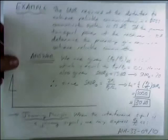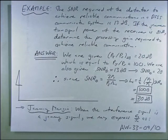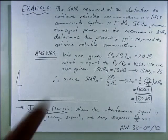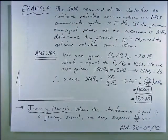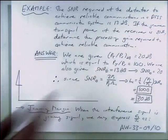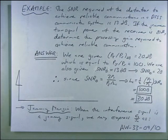So this is what the next example is going to be about. Because everyone's probably wishing for an example and an end to this lecture. So the example is, the signal-to-noise ratio requirement at the detector to achieve reliable communications in a DSSS system is 13 dB. The jammer-to-signal power at the receiver is 20 dB. Determine the processing gain required to achieve reliable communications. So this sounds like Martian to everyone, probably, at this point. Yeah, a little bit.